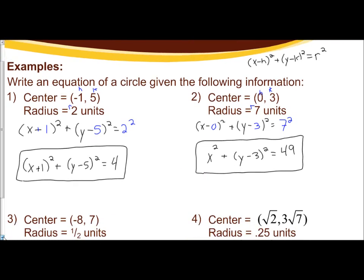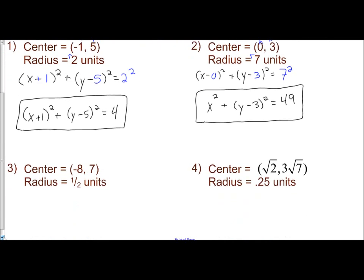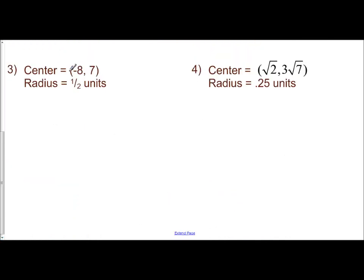Let's look at examples 3 and 4. We notice in example 3, still have our h, still have our k, represented by the center. But this time, our radius is a fraction, which is not a big deal. So we have x minus a negative 8. So we have x plus 8 squared, plus the quantity, y minus k. So y minus 7 squared, equals, I'm squaring the fraction 1 half for this.